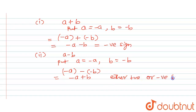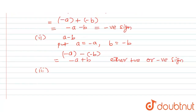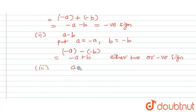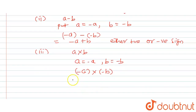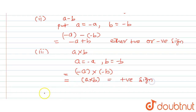Now for the third part, a into b: since a and b are two negative integers, a equals minus a and b equals minus b. So we have minus a multiplied by minus b. As we know, when two numbers with negative signs are multiplied together, the resultant number is always positive. So the sign will be positive.